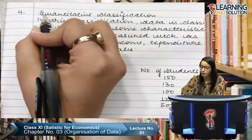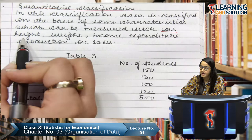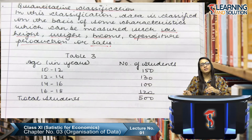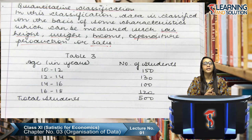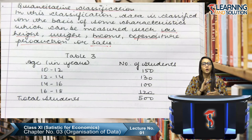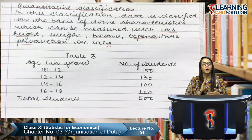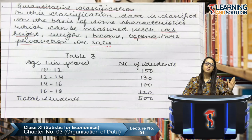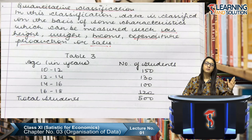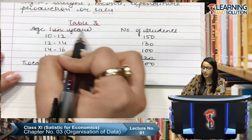The fourth method is quantitative classification — data is classified on the basis of characteristics which can be measured, such as height, weight, income, expenditure, production, and sales. When we classify data in quantitative figures that are measurable — like height, weight, marks, or income generated — it is called quantitative classification. Qualitative classification is based on attributes (characteristics), while quantitative classification is based on measurable quantities.